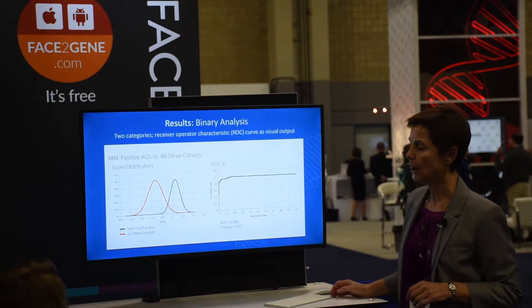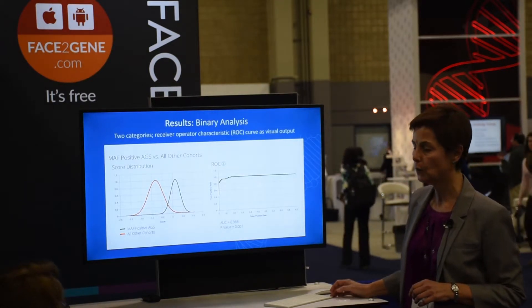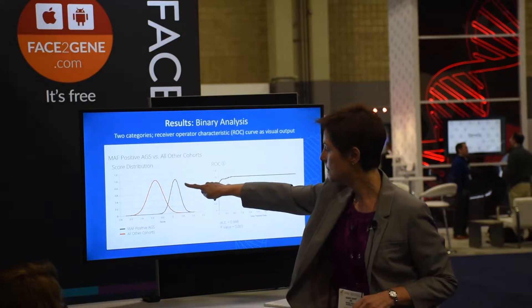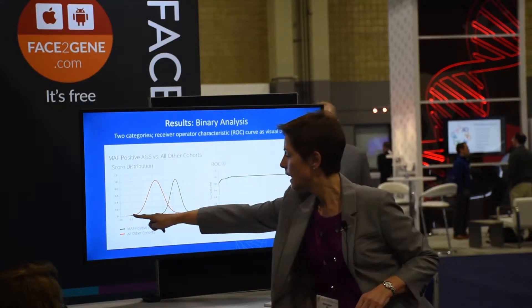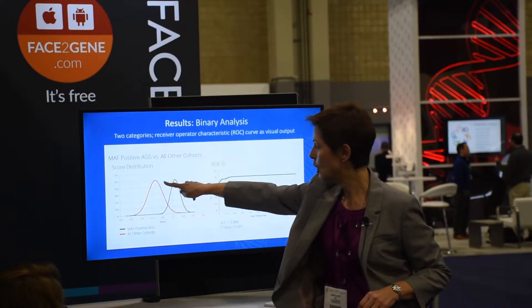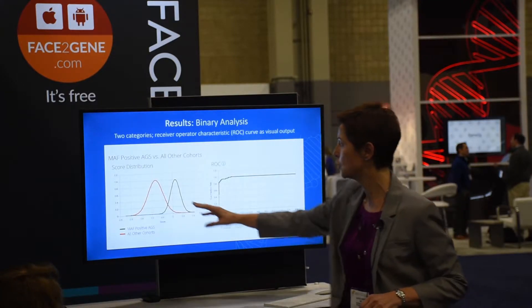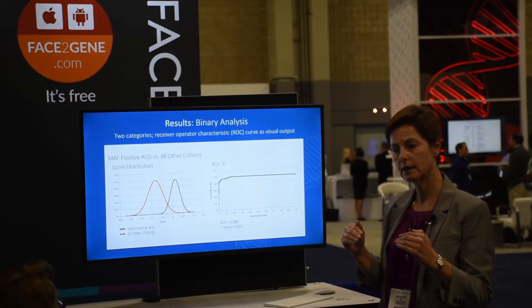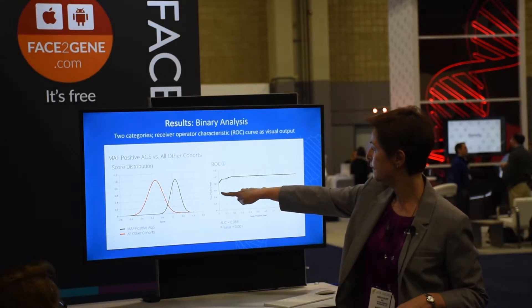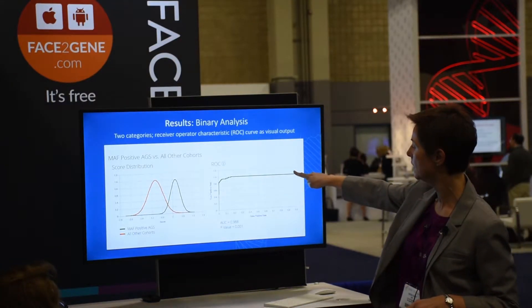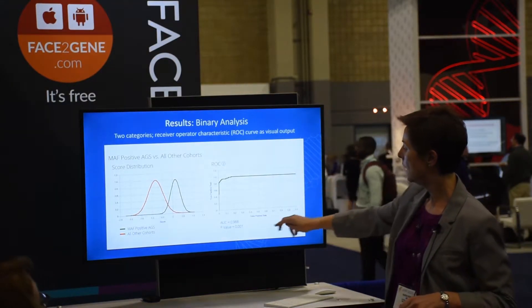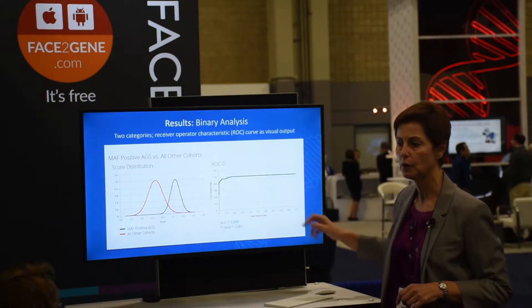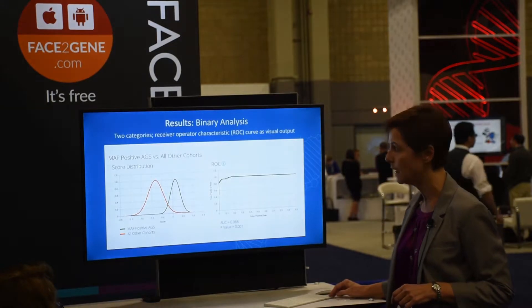We also had a binary comparison where two cohorts are compared to each other. Here in green is the AMA grip syndrome cohort compared to all other cohorts — the Down syndrome and the unaffected controls. This binary comparison is visualized as the receiver operator characteristic curve shown here, with the area under the curve and the p-value also shown.